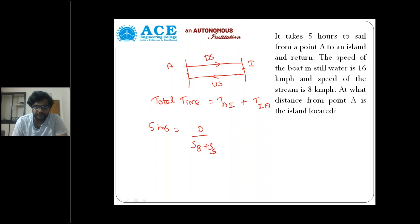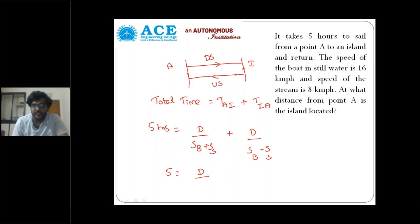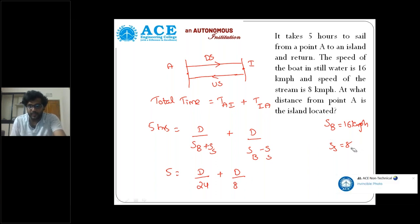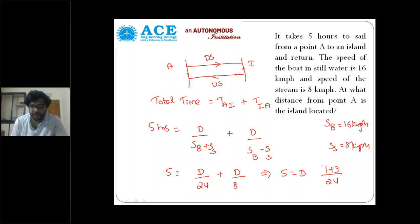Distance divided by 24 plus distance divided by 8 equals five hours. With one equation and one unknown, taking LCM as 24, we get one plus three giving four, so the equation becomes distance times four over 24 equals five. Calculating, distance is nothing but 30 kilometers.